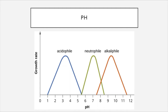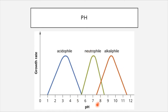Moving on to the growth requirement of pH — pH is very similar in that each species has an optimal pH, and we can categorize microbes based on where their optimal pH falls. If their optimal pH is around 7, we call these neutrophiles. If their optimal pH is acidic, we call these acidophiles. If their pH optimum is higher, we call these alkalophiles. We almost never find organisms that prefer a basic pH in the human body — we find neutrophiles, such as in saliva, and acidophiles in the stomach, gut, or vaginal canal.